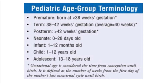Next is child — the age group between 1 to 12 years old. Then adolescence means 13 to 18 years of age.